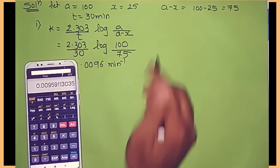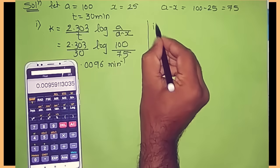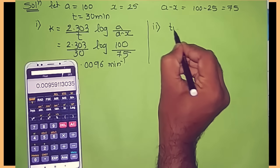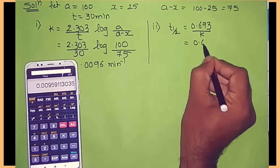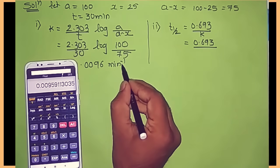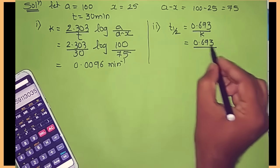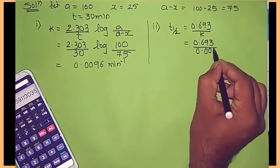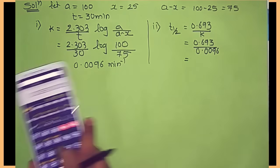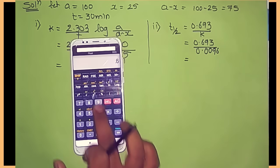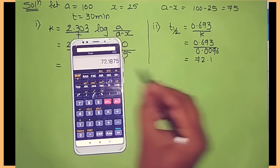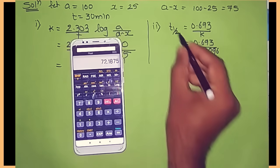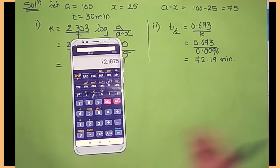For half-life, using t half equals 0.693 upon k, with k equal to 0.0096 minute inverse: t half equals 0.693 divided by 0.0096, which equals approximately 72.19 minutes.